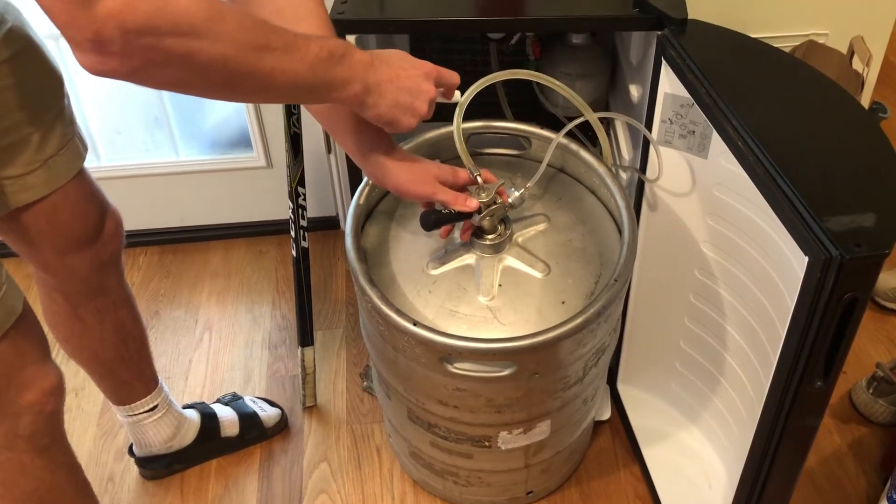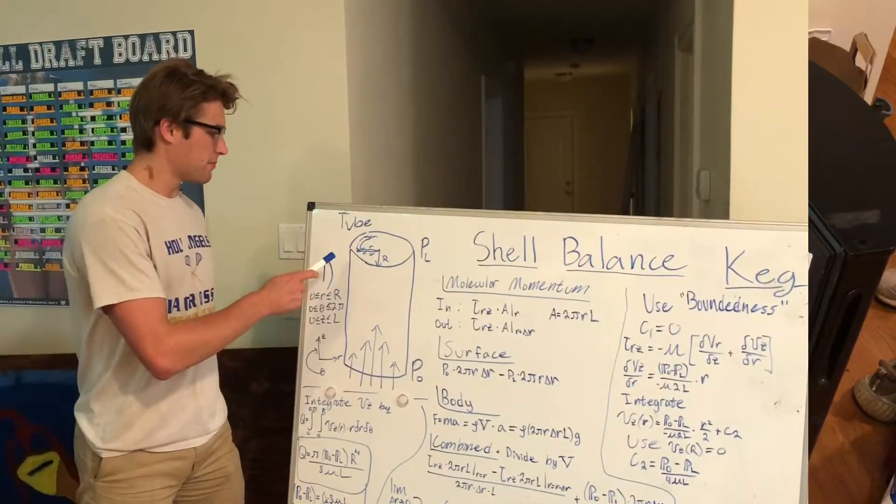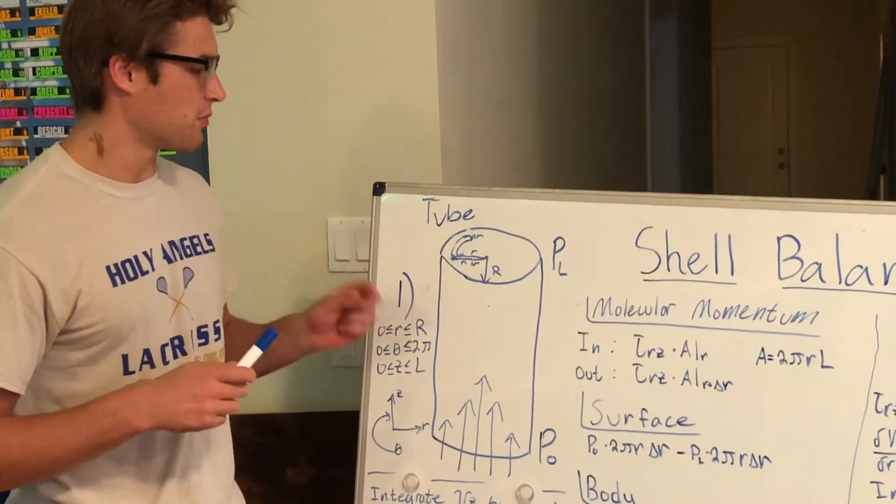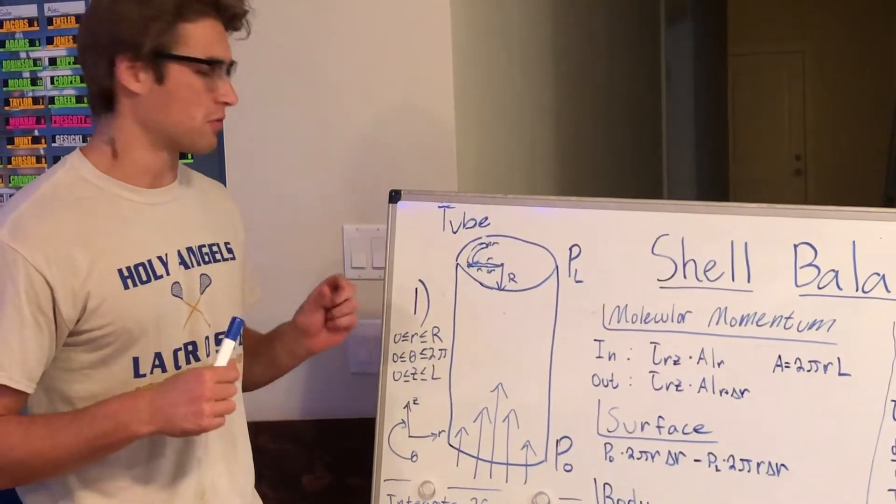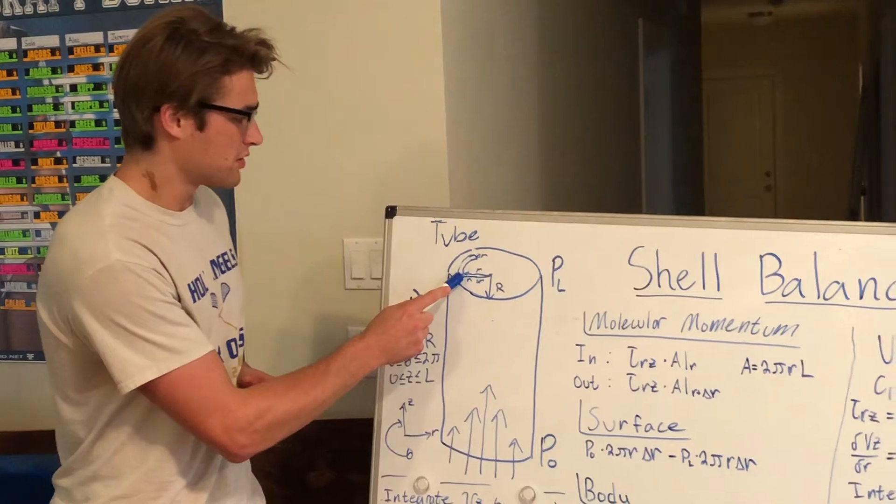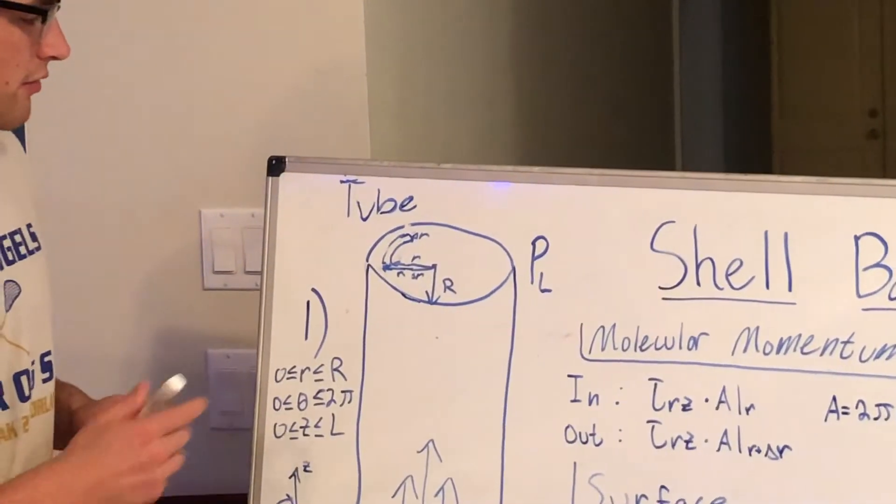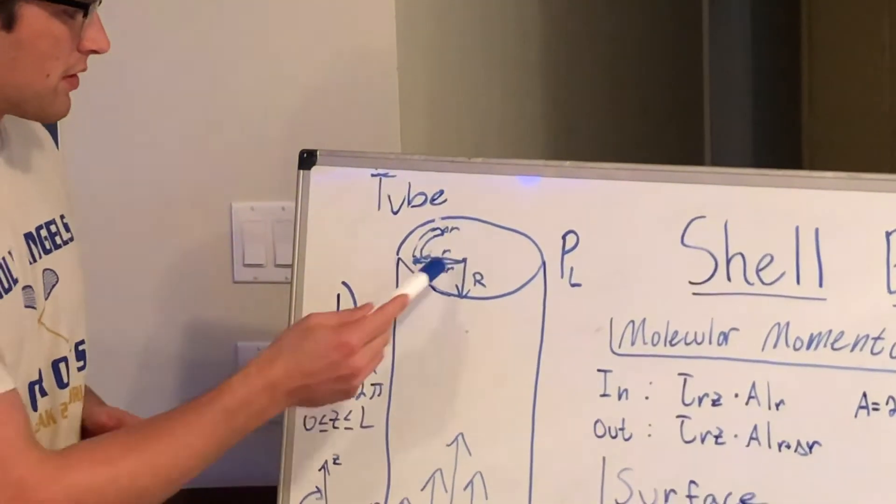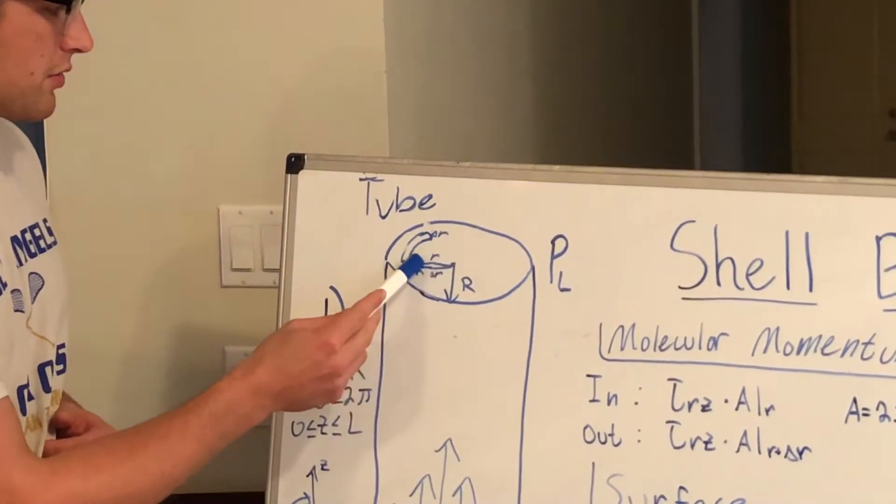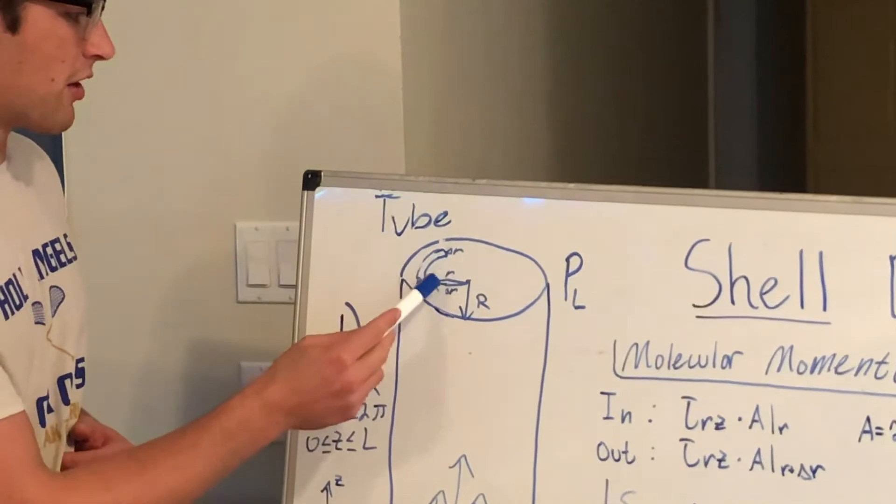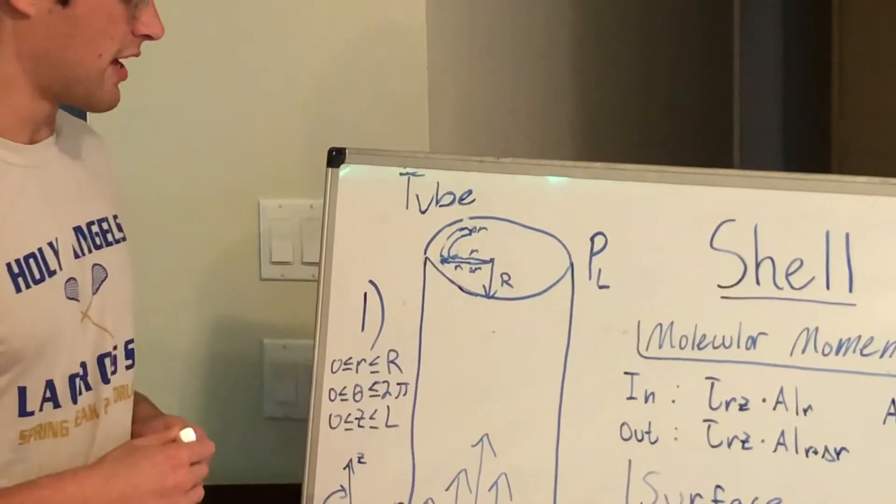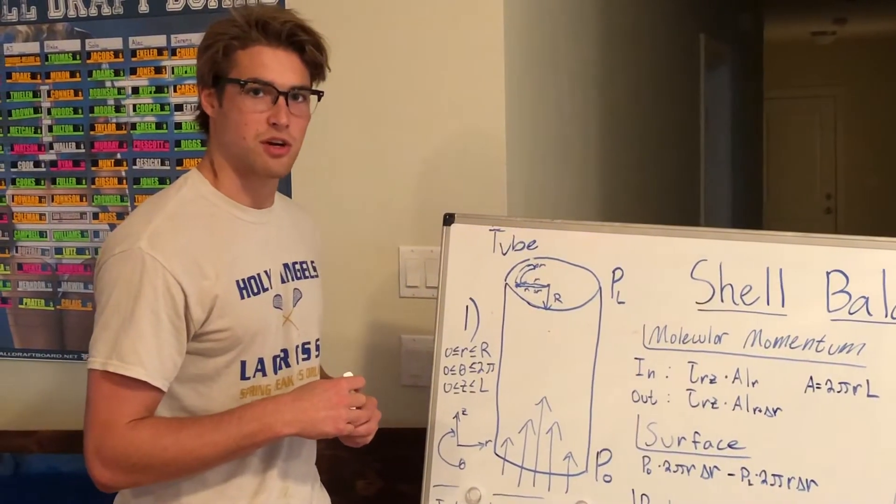Let's check out the kegerator tube. As you can see, fluid flows through the tube in this direction. To describe the fluid through the whole system, we're going to take a small part of the system and describe the flow through that. Here, as you can see in this picture, we've taken a small shell of radius delta r. From the center to the shell is just r, but from the center all the way to the edge of the shell is r plus delta r.